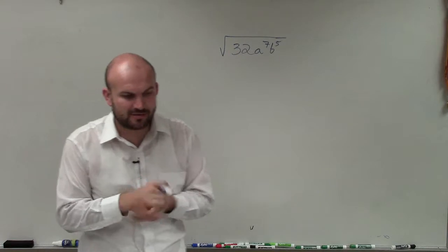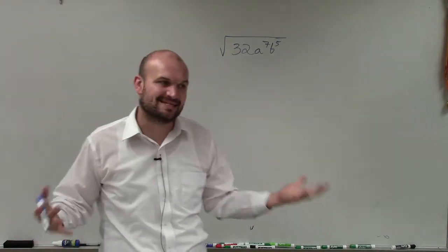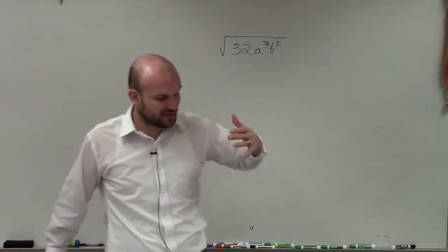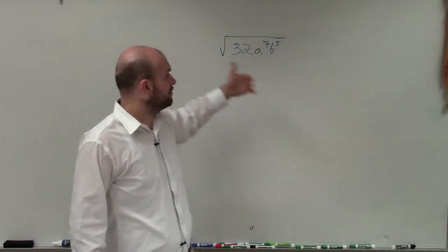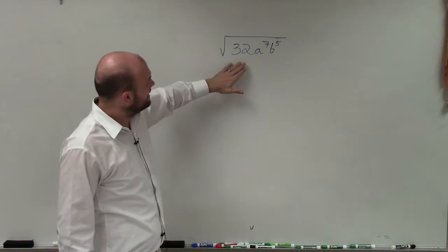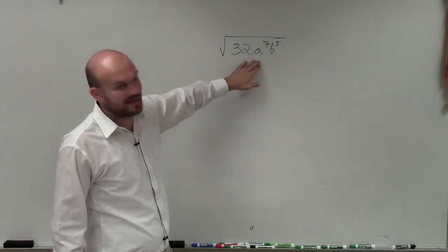To do that, we need to determine what we can take the square root of and what we cannot. Remember, taking the square root is trying to determine what values multiplied by themselves are going to give us our radicand—what number multiplied by itself is going to equal our radicand.